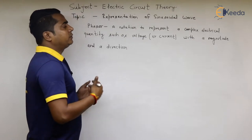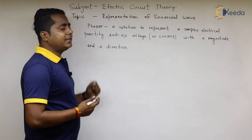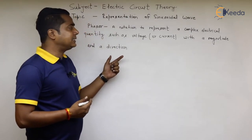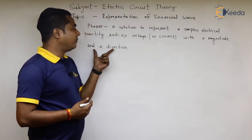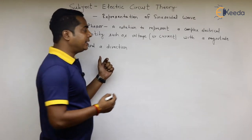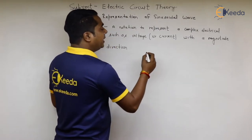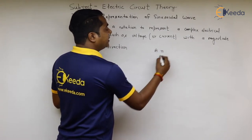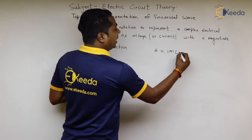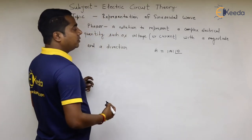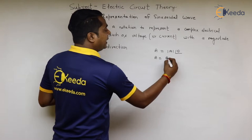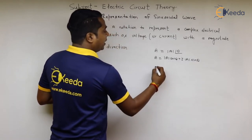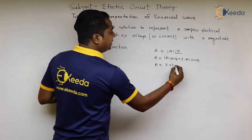While studying sinusoidal waves, we will learn what a phasor is. A phasor is a notation to represent a complex electrical quantity such as voltage or current with a magnitude and a direction. Let us assume we have one complex electrical quantity — a vector with magnitude A and angle theta. This can be represented as A·cos(θ) + j·A·sin(θ), which we can write as x + j·y.